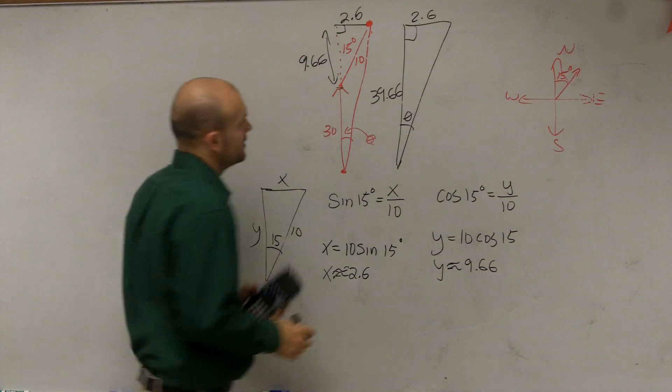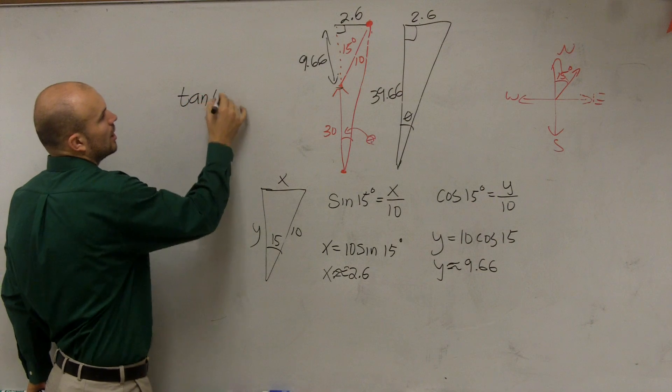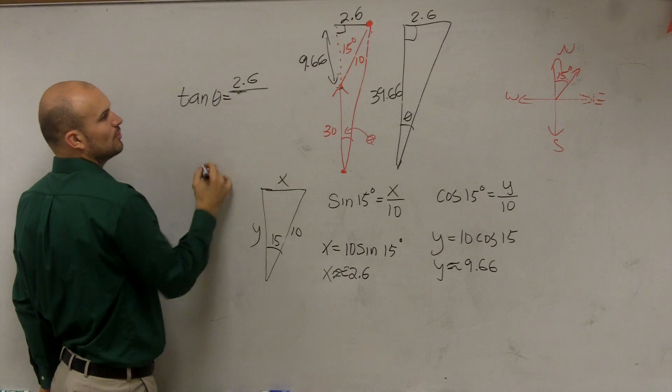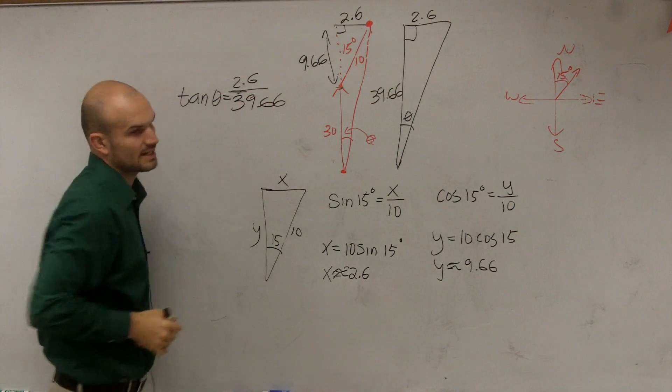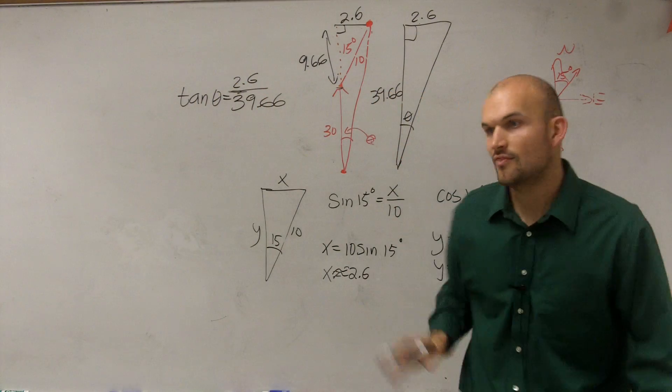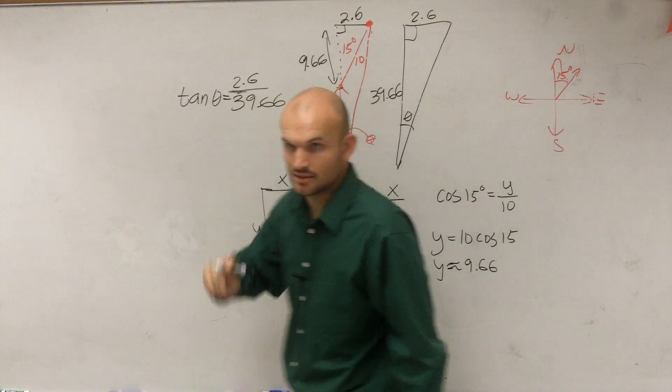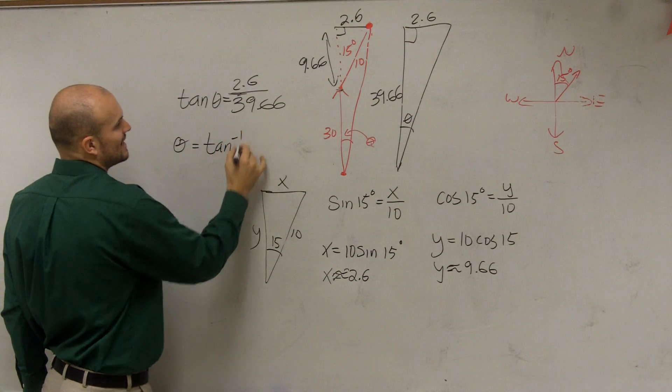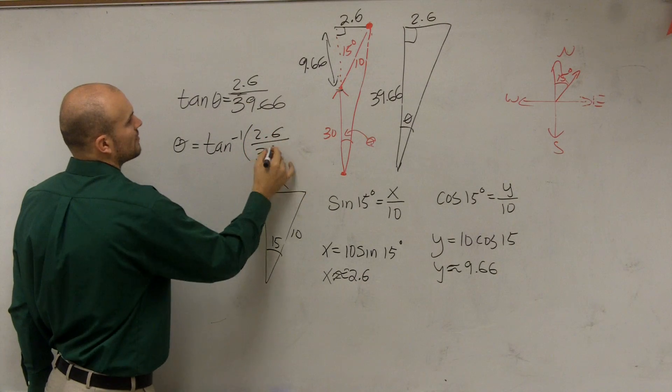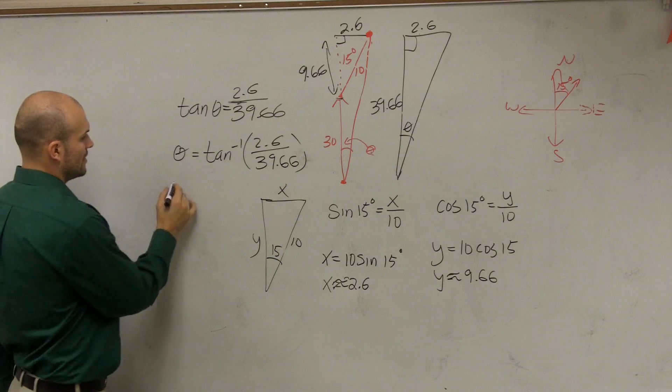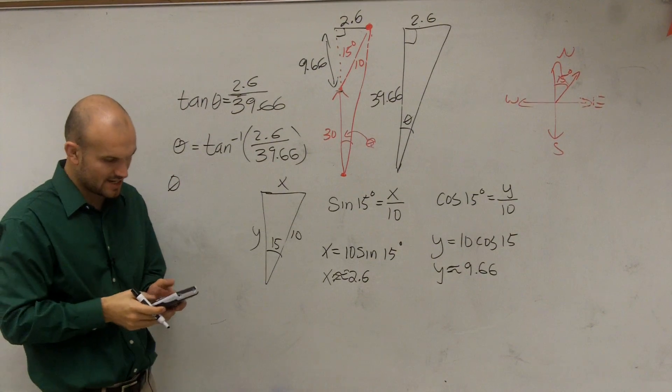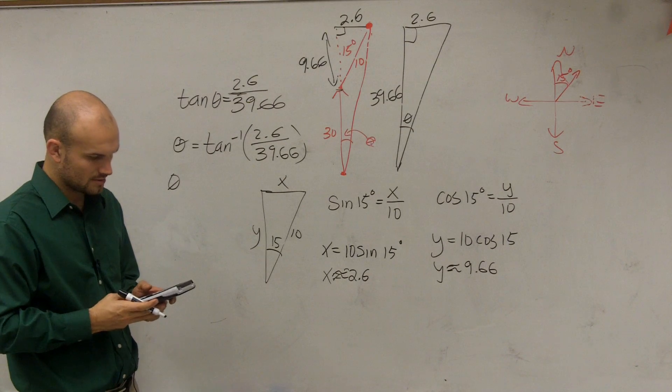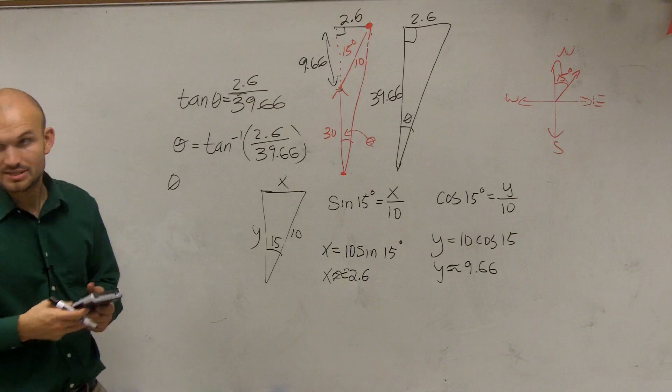So let's write it over here. So I'll say tangent of theta equals 2.6 divided by 39.66. Does that make sense? Then, to find theta, I need the inverse function. So theta equals tangent inverse of 2.6 over 39.66. Therefore, theta equals, so I take inverse tan of 2.6 divided by 39.66, 3.75.